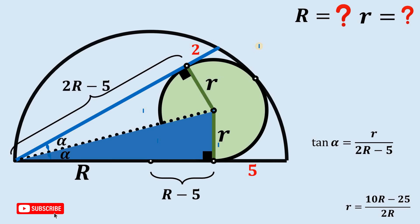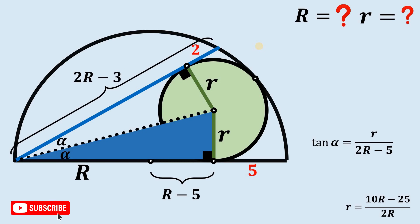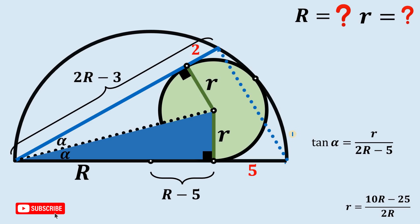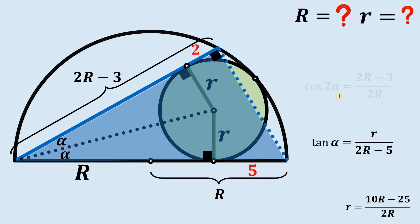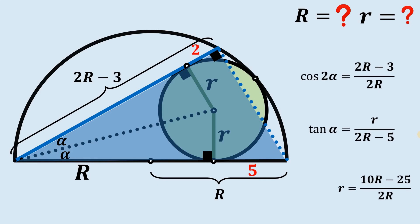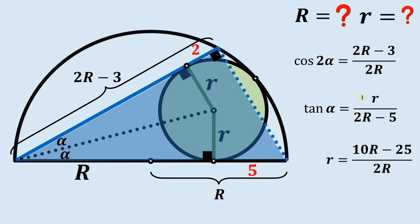Extending this, the length of the blue chord simply equals 2R minus 5 plus 2, or simply 2R minus 3. Now from this point, connecting to another point creates another right triangle, and we can use this to find another equation containing capital R and small r. Take note that we have angle 2 alpha here, with the adjacent side and hypotenuse given — so we use the cosine function. Also, this length over here is simply capital R. So we can say cosine of 2 alpha equals 2R minus 3, all over 2R.